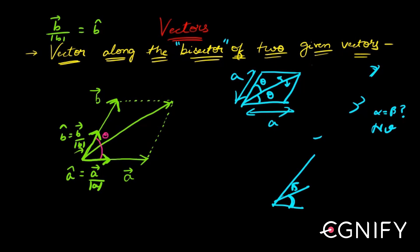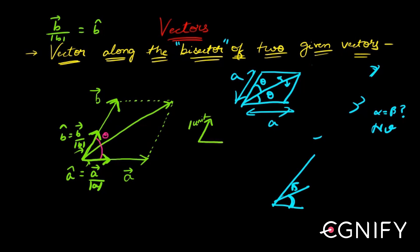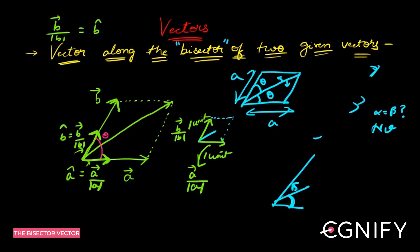Now look at these two arms. This arm — b̄/|b| — has a magnitude of one unit, and this arm — ā/|a| — also has a magnitude of one unit. If I take the resultant of these two unit vectors, this new vector will exactly bisect the angle, making it theta by 2 and theta by 2.